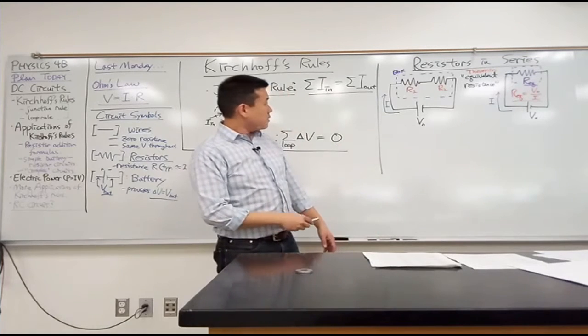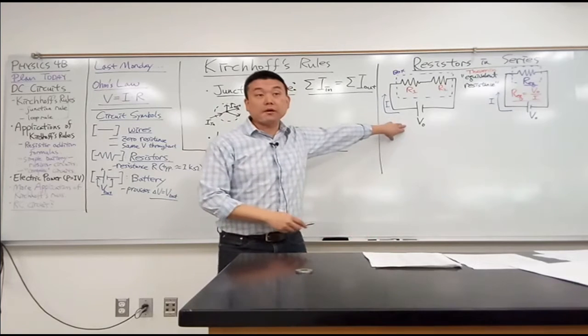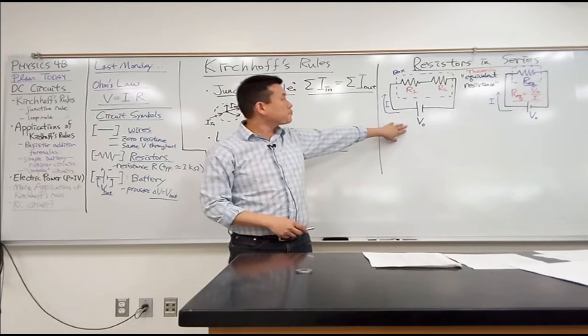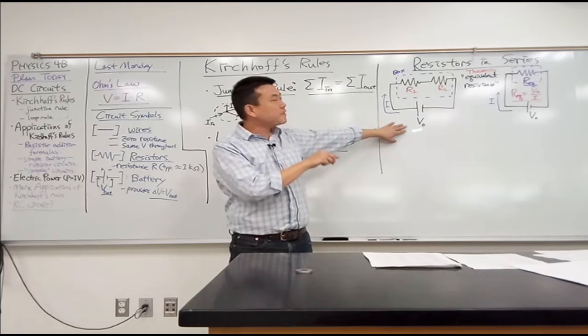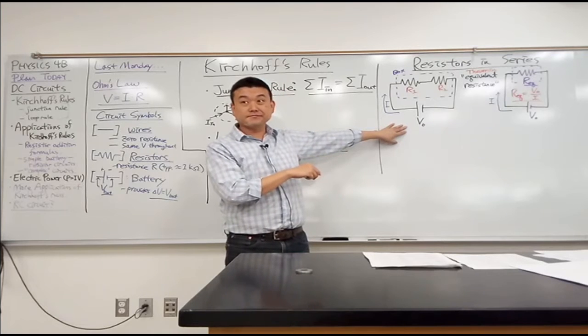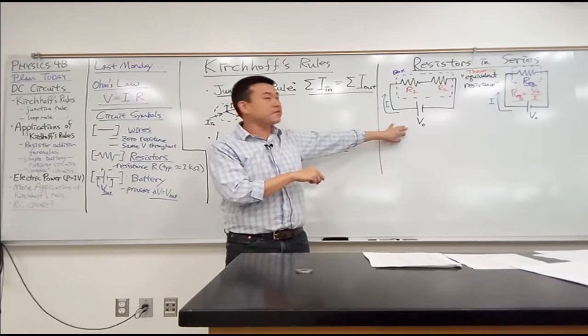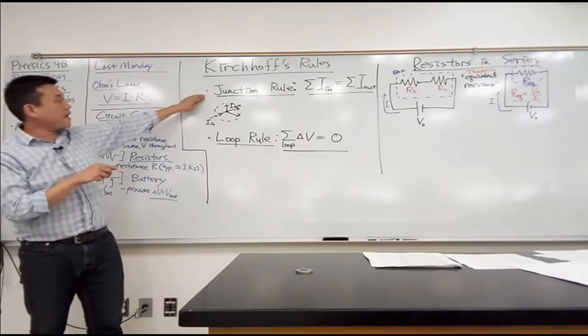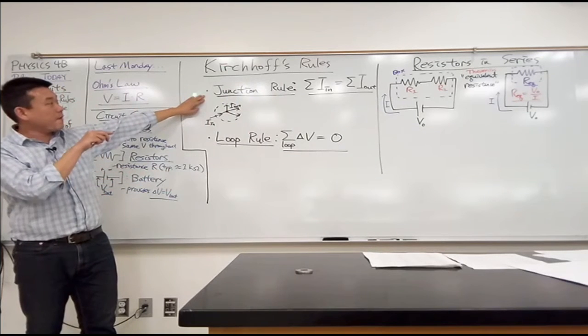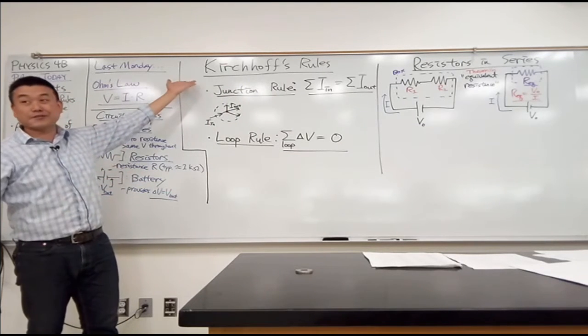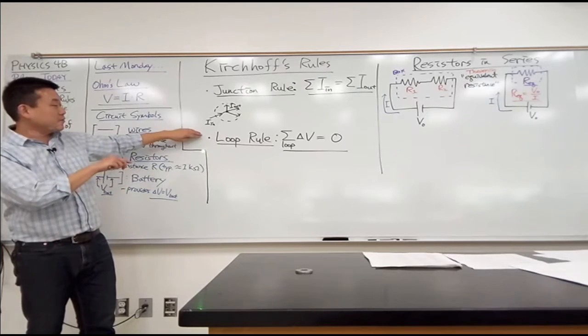So let's do the simple one first. Do you see any junctions here? No junctions, right? Okay, so that means, as I try to apply Kirchhoff's rules, I can forget about applying the junction rule, because there's no junction to use it on. And I'll just use the loop rule.